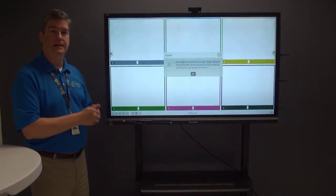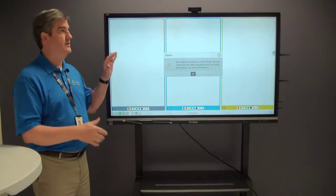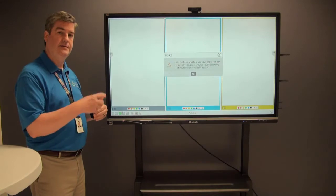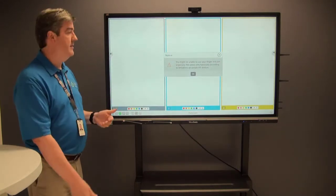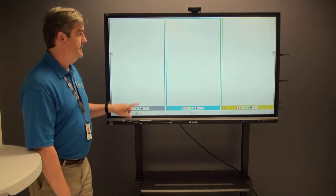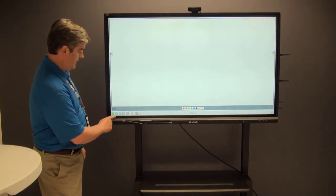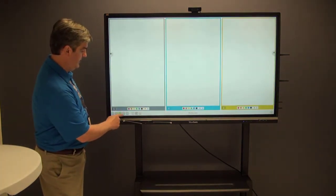A few things here - what this does is it automatically subdivides your IFP space into equal size parts to have students come up and interact with the whiteboard. In this case it's already divided into three parts, but we can choose one part, two parts, three, four, or even six parts.